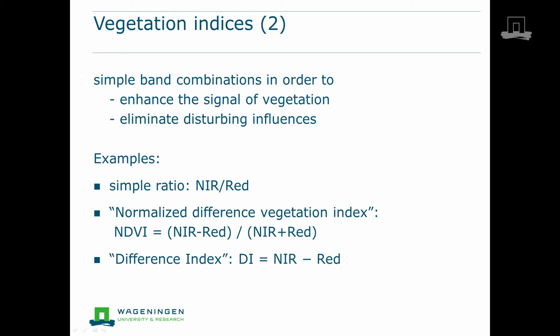An example is a simple ratio between red and near infrared reflectance. This ratio will be close to one for both the wet soil and the dry soil, thus correcting for its variations.